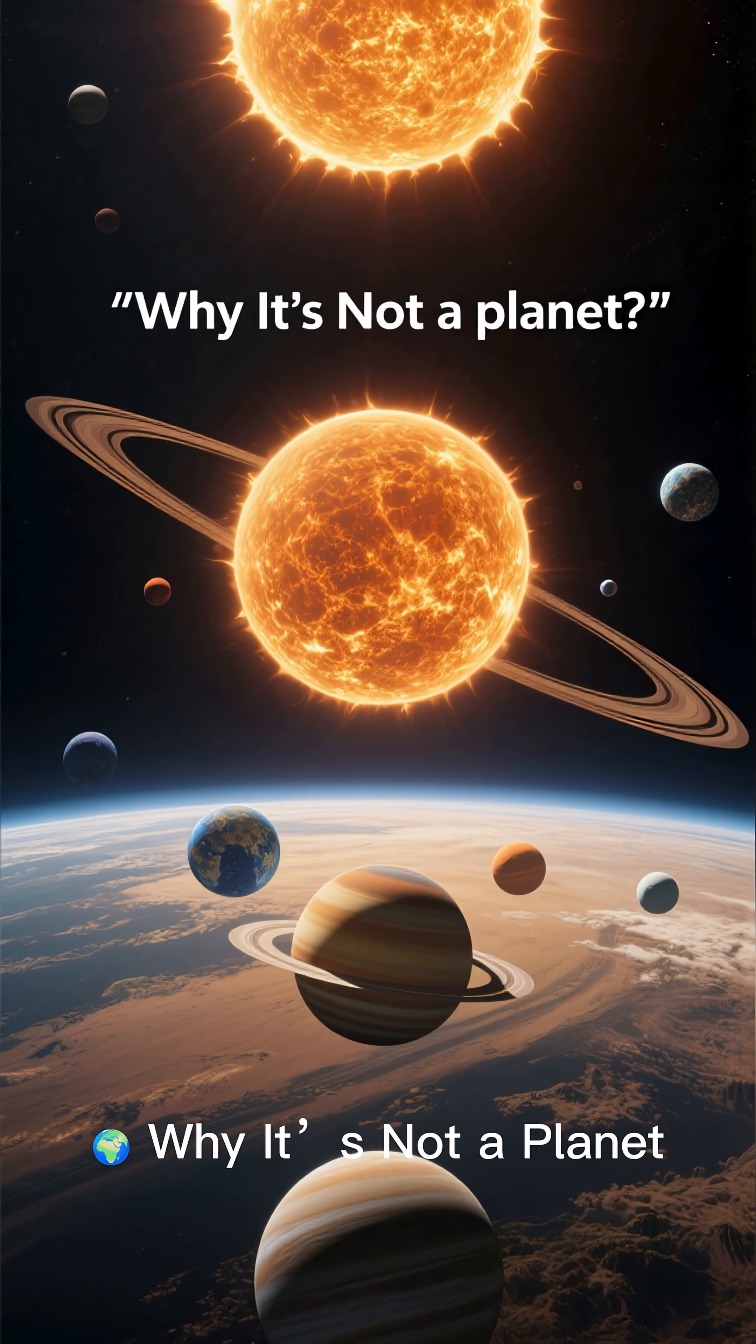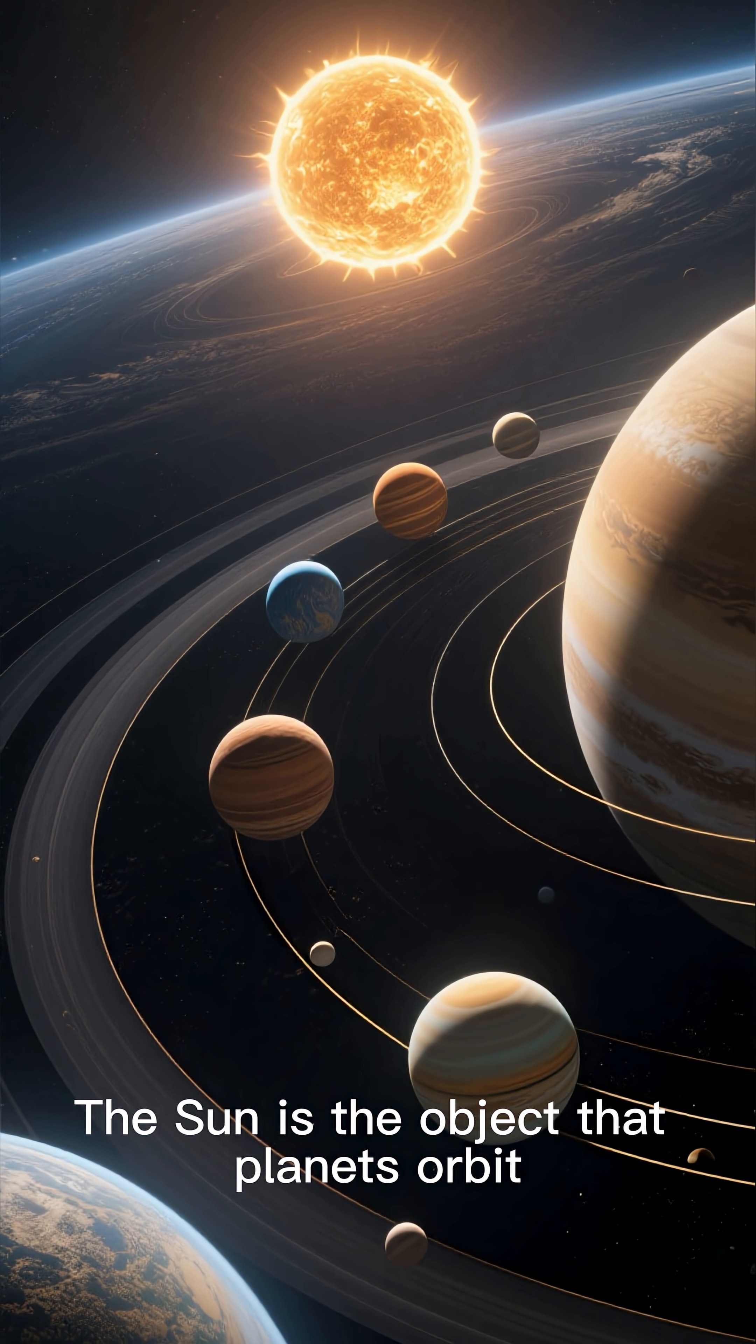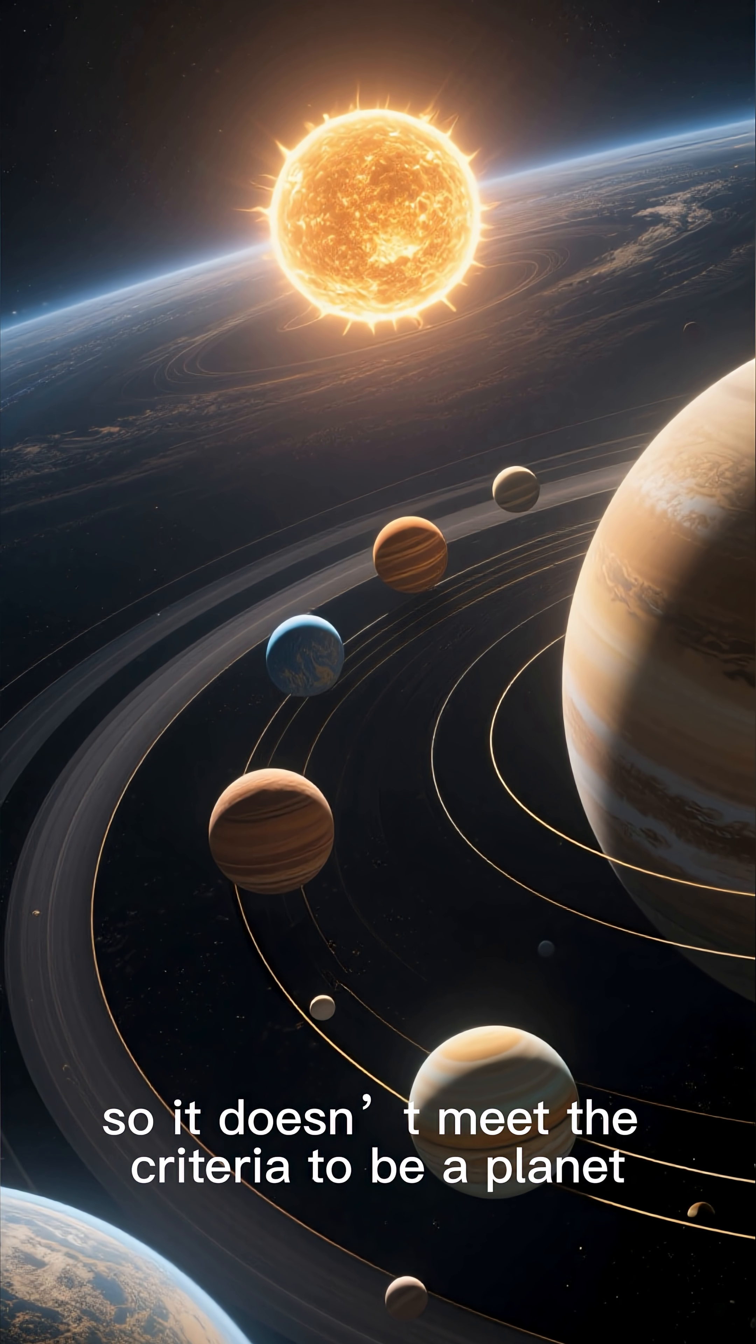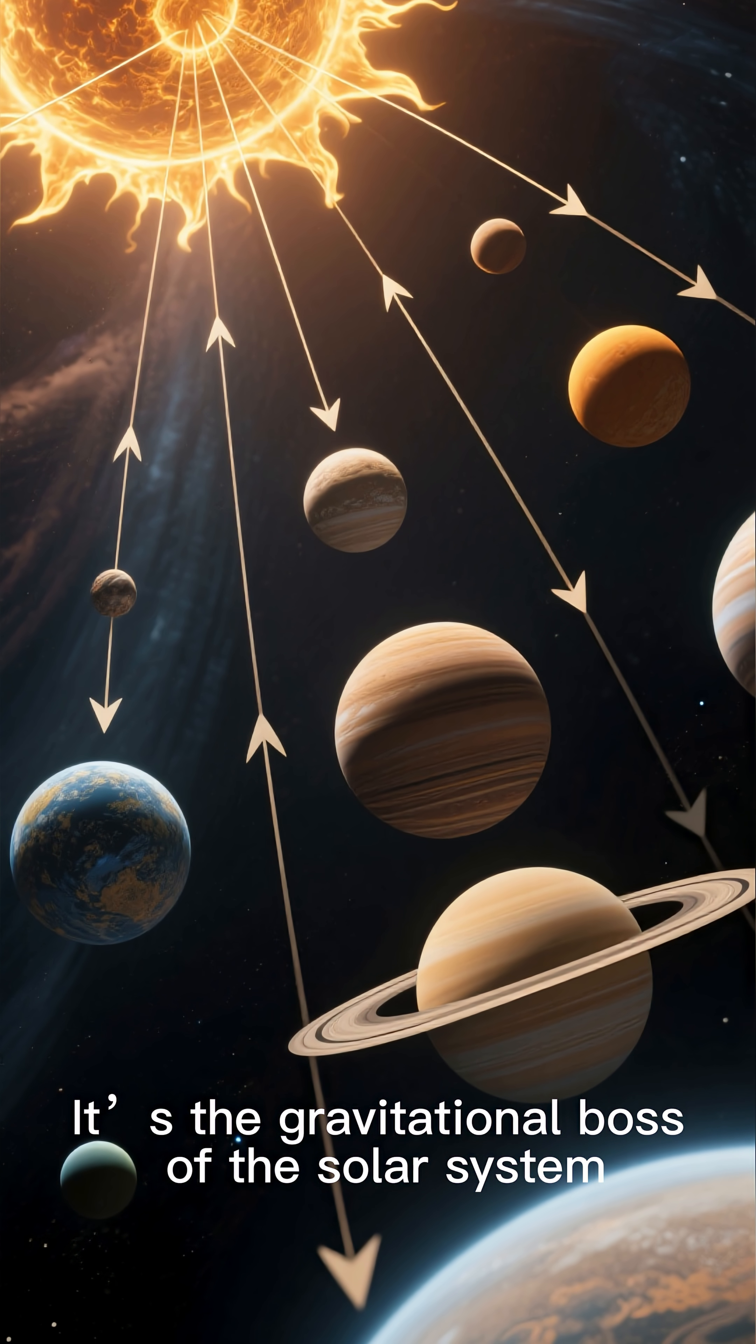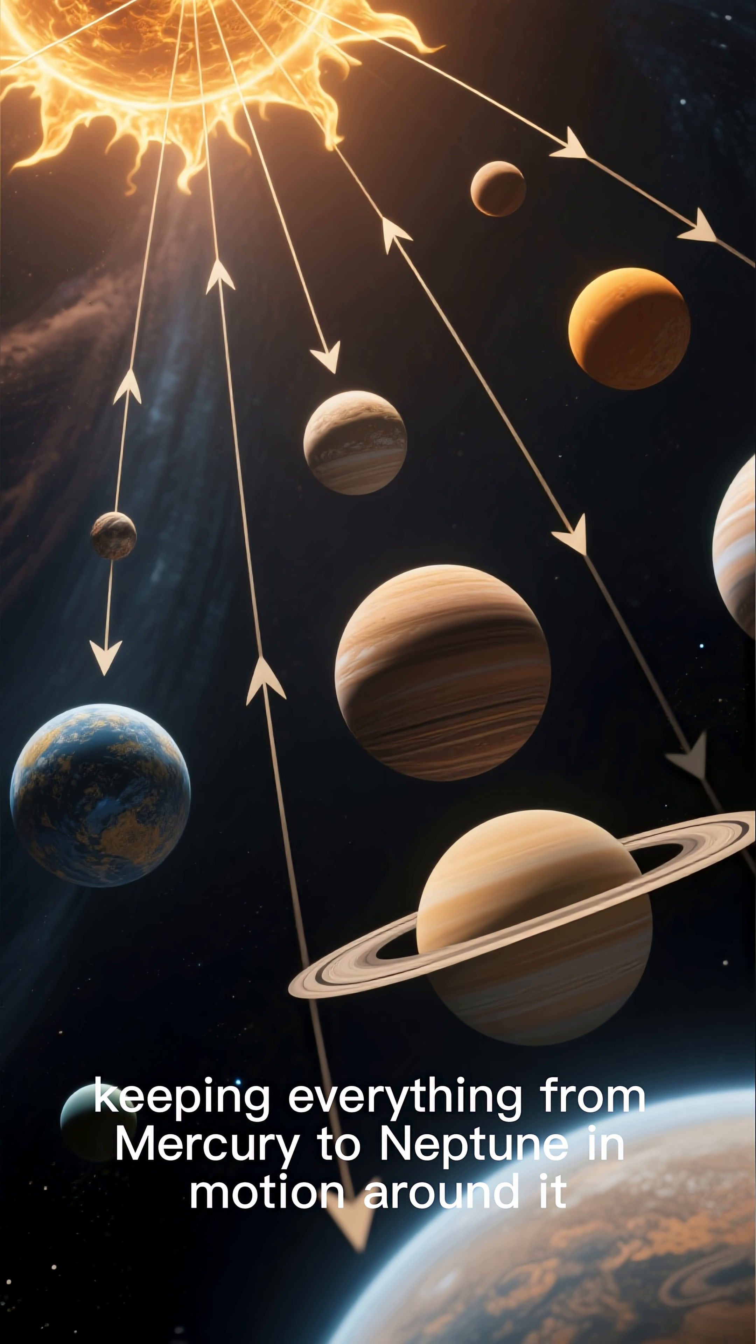Why it's not a planet: planets orbit stars. The sun is the object that planets orbit, so it doesn't meet the criteria to be a planet. It's the gravitational boss of the solar system, keeping everything from Mercury to Neptune in motion around it.